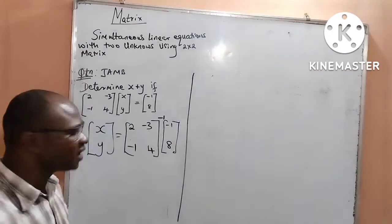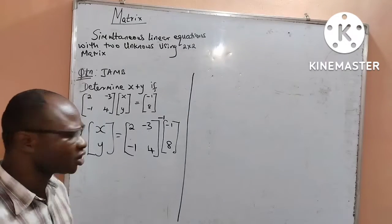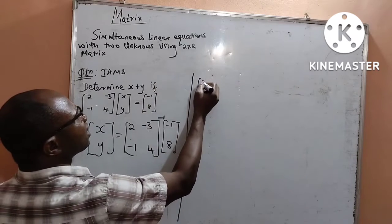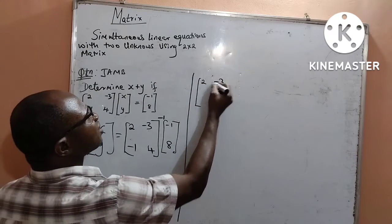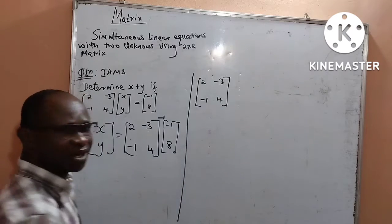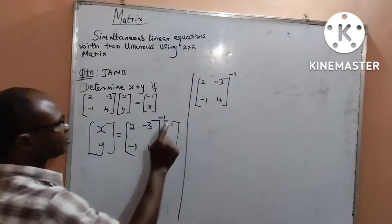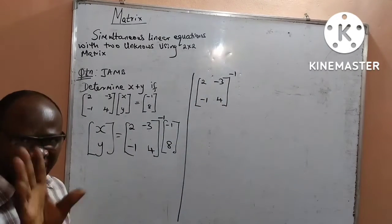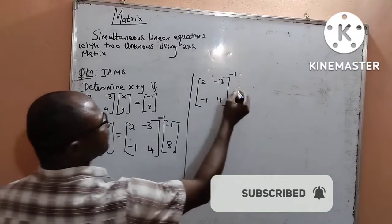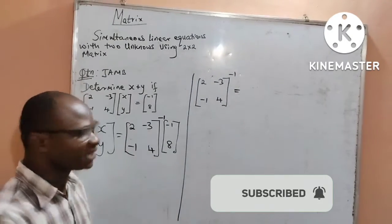The first thing that we need to do is to find the inverse of this 2x2 matrix. But before that, first and foremost, we get to find the value of the determinant. I want to find the inverse of my given 2x2 matrix. First, I want to get the determinant.